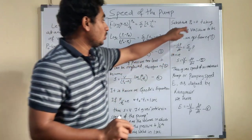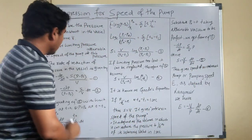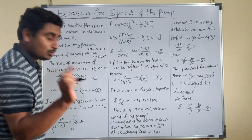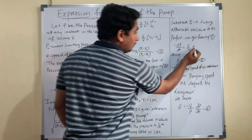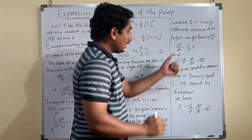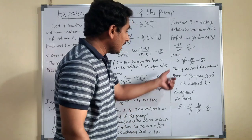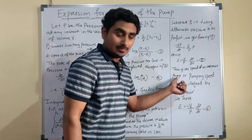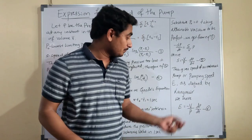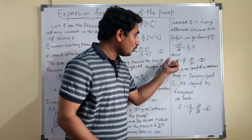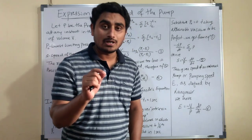Now substituting P0 = 0 — taking the attainable vacuum to be perfect — equation 1 becomes: minus dP/dt = S·P/V. Solving for S gives: S = −(V/P)·(dP/dt), which is equation number 5. This gives the speed of an exhaust pump. According to Langmuir, we rewrite this as: E = −(V/P)·(dP/dt), which is equation number 6.